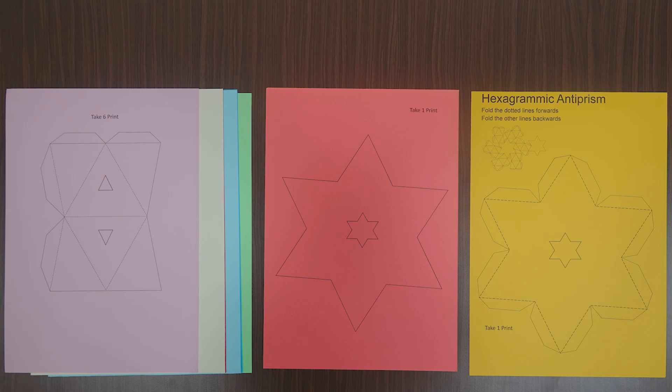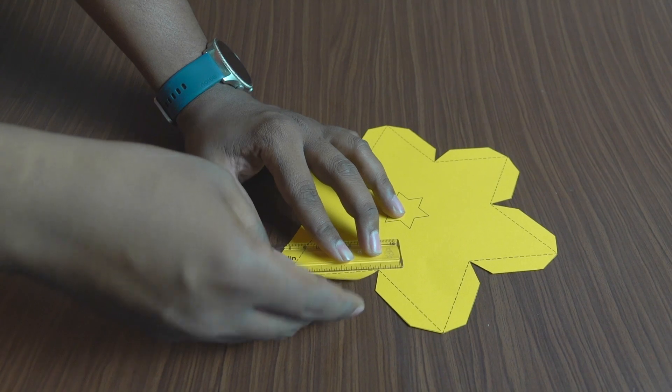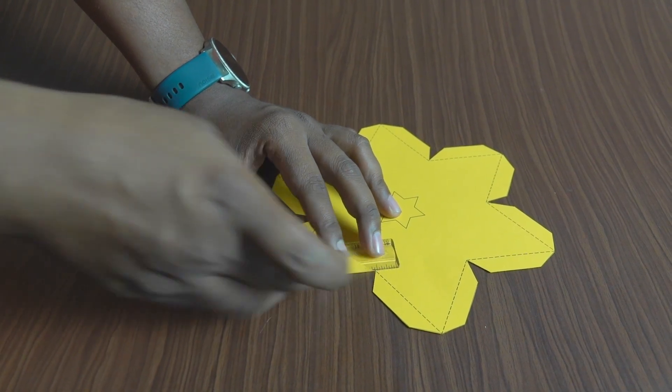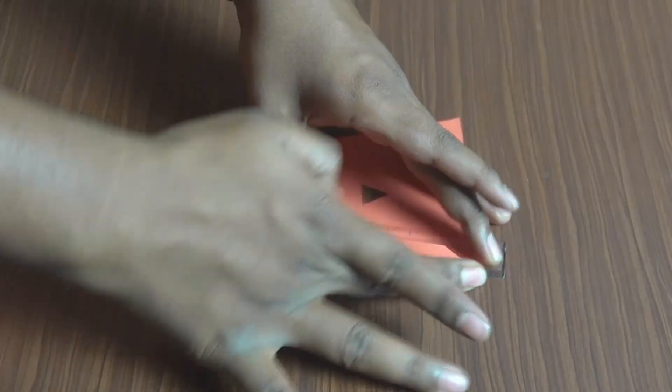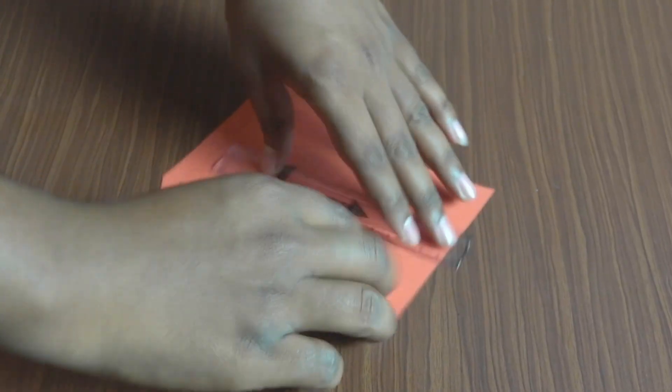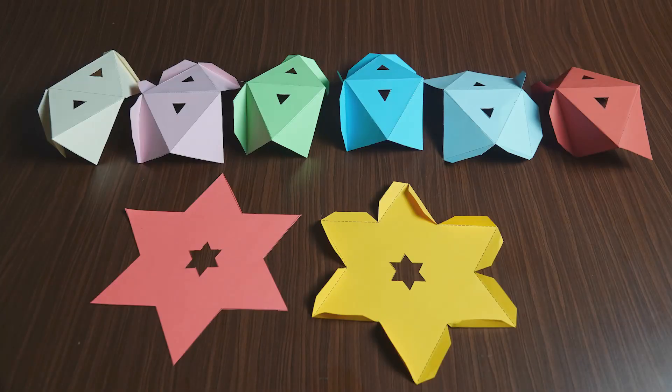Take the printout of the template shapes onto various colorful papers and cut out those shapes as per the given lines. Various cutouts and the flaps that you see can be folded using a scale.